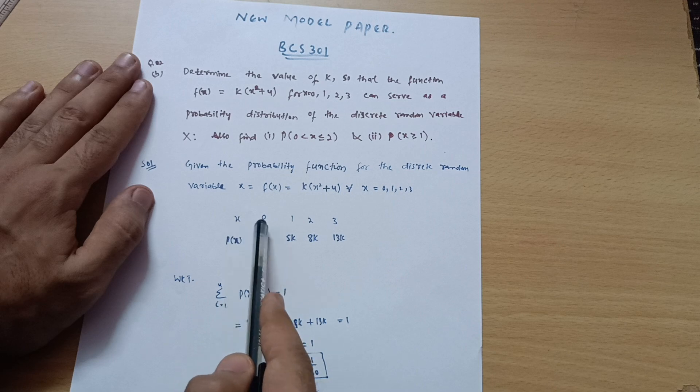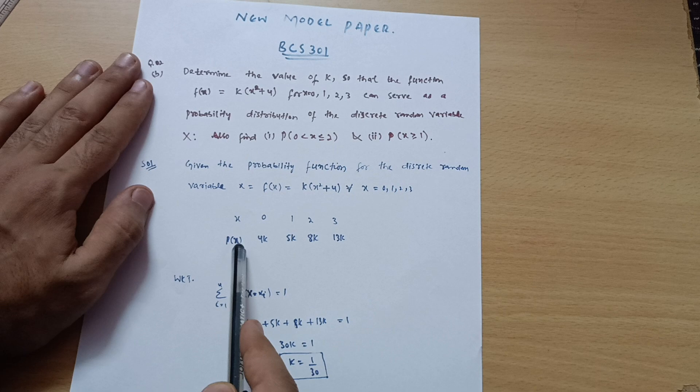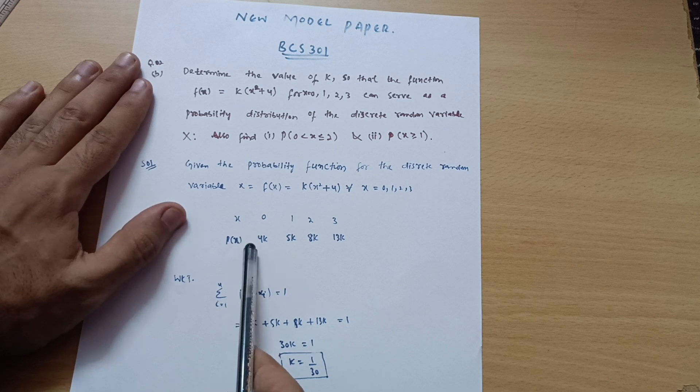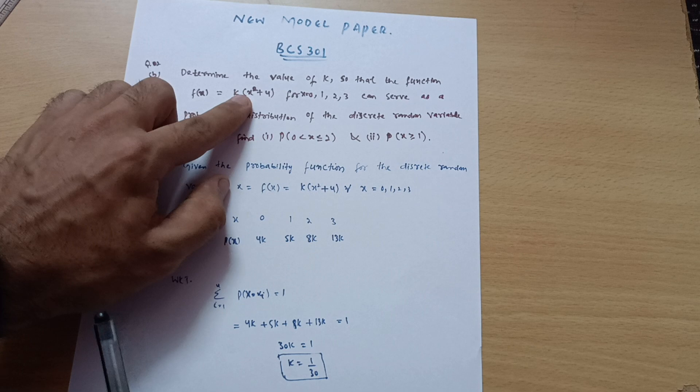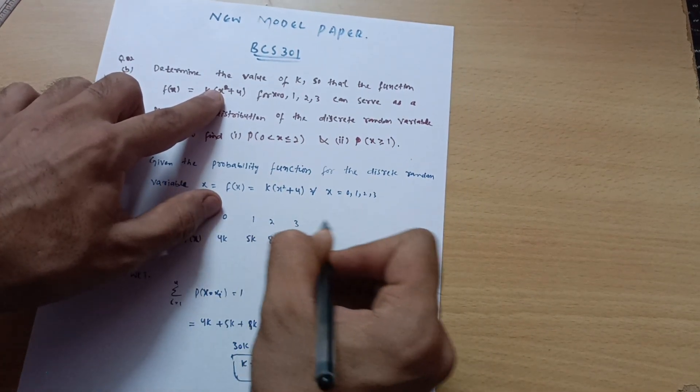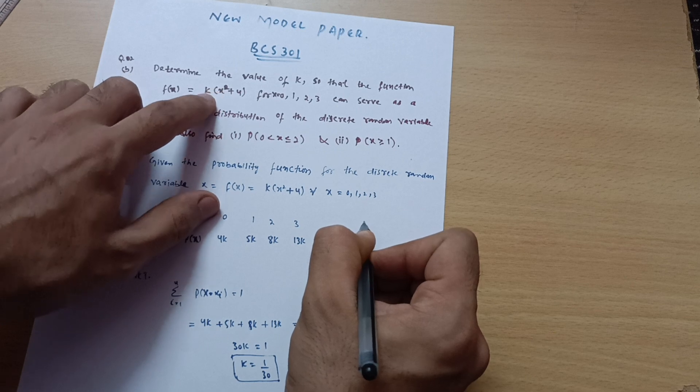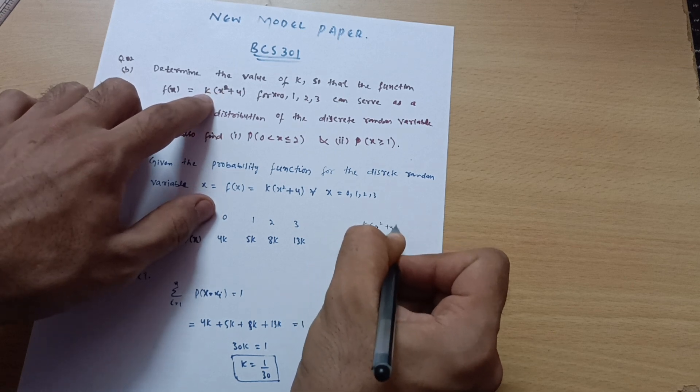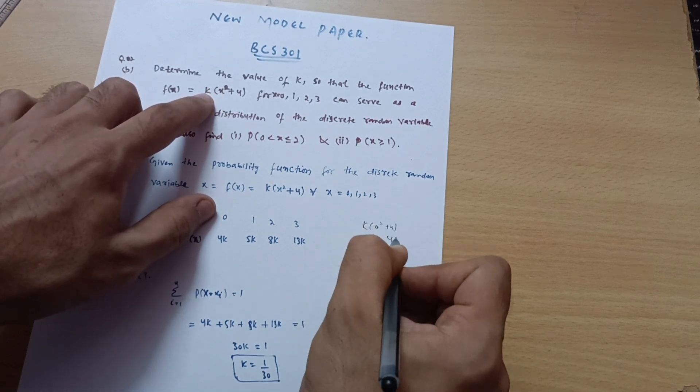First take the x values as 0, 1, 2, 3. Now p(x) probabilities you can calculate by putting the value of x in this equation. First we take the 0 value. So k(0² + 4), you will get 4k.